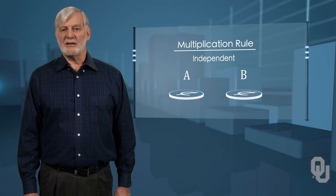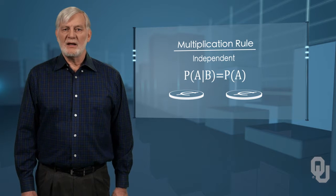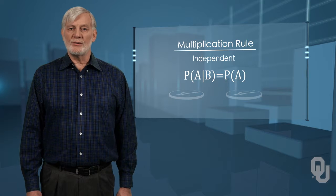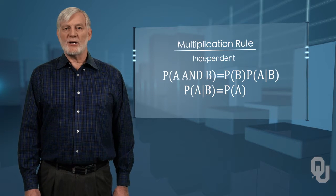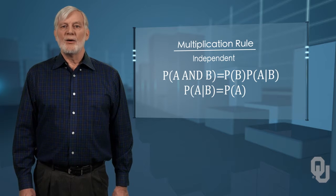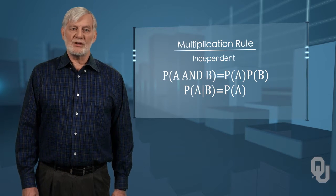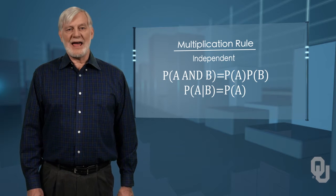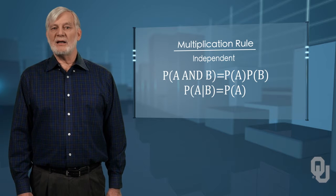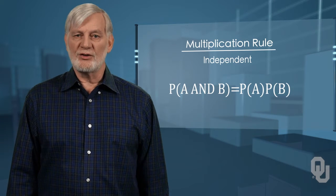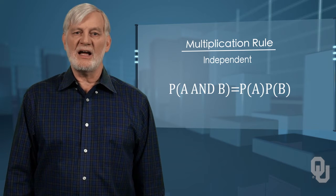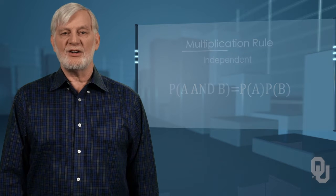If A and B are independent, then the probability of A given B equals the probability of A. So the multiplication rule — probability of A and B equals probability of B times the probability of A given B — becomes, by substitution, probability of A and B equals probability of A times simply the probability of B. In that situation, there is no conditional term because independence says the probability of A, given that B occurred, is irrelevant.